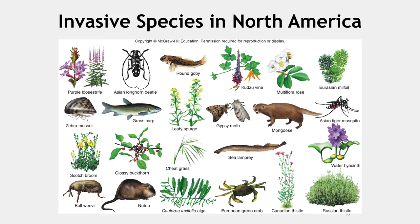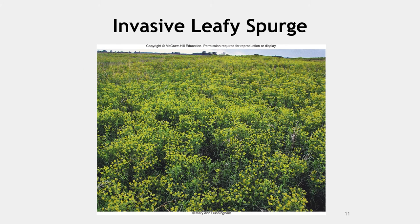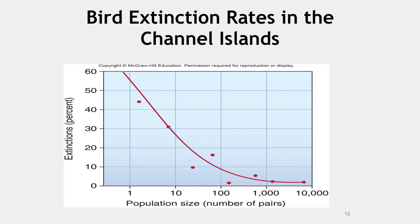Florida has many invasive species, both plant and animal, because they are often imported from Asia or South America. This photograph shows the invasive leafy spurge, which blankets a formerly diverse pasture. Introduced accidentally and inedible for most herbivores, this plant costs hundreds of millions of dollars each year in lost grazing value and in weed control. This graph shows the extinction rates for birds in the Channel Islands off the coast of Southern California as a function of population size. Small population size is often a precursor to extinction.